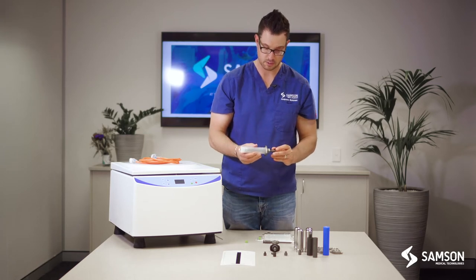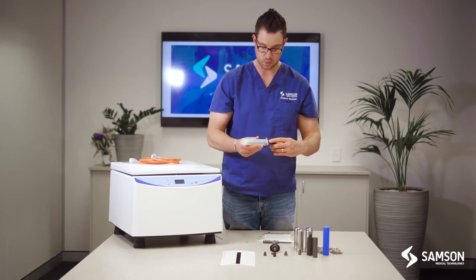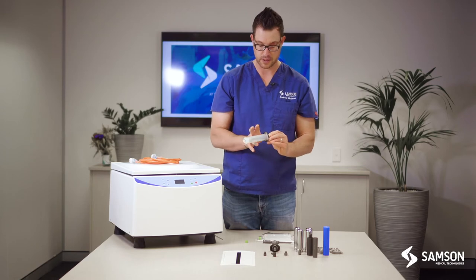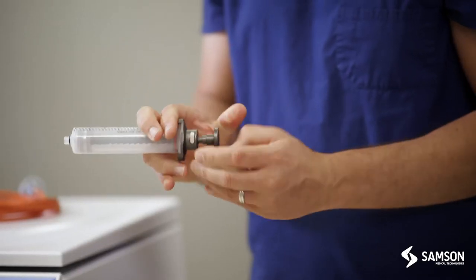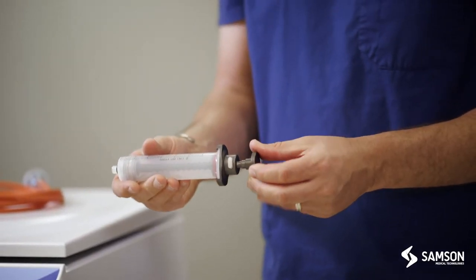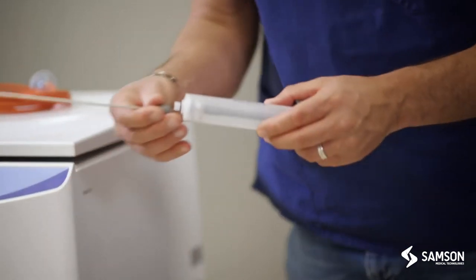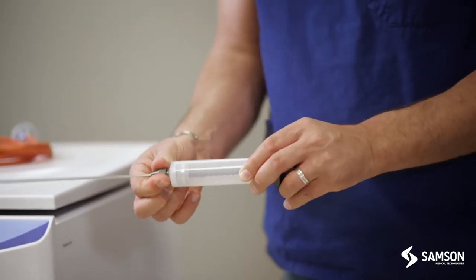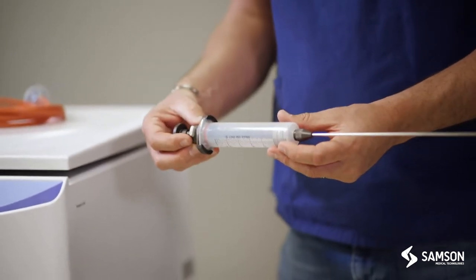There's a little grey button on the other side that, once pressed, we can then push the plunger down as well. We can then take our cannulas and connect that to the syringe, and then that is now ready for harvesting.